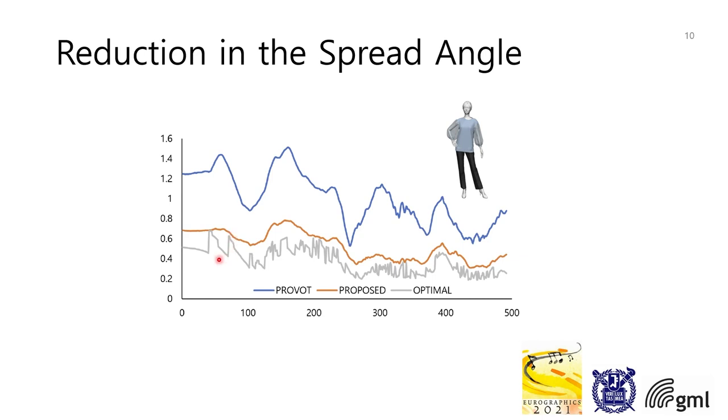In addition, we made an optimal bounding cone with the normals of all triangles included in the node without considering the hierarchy. It is plotted in gray. It can be seen that the proposed method is much closer to the optimal than the previous method.